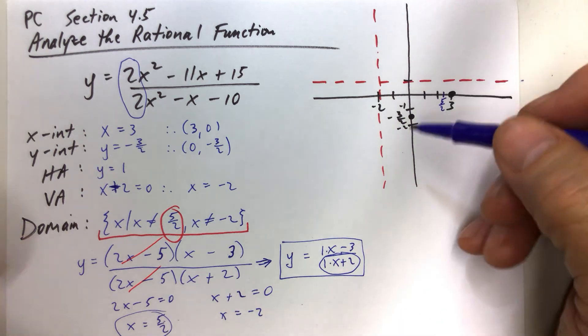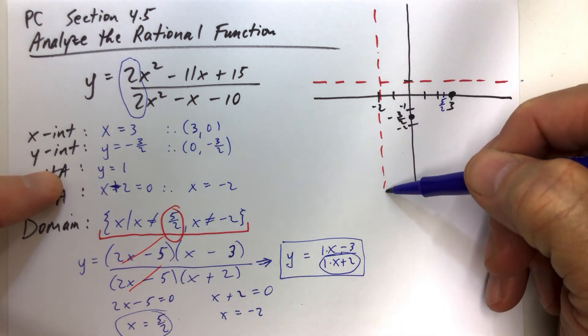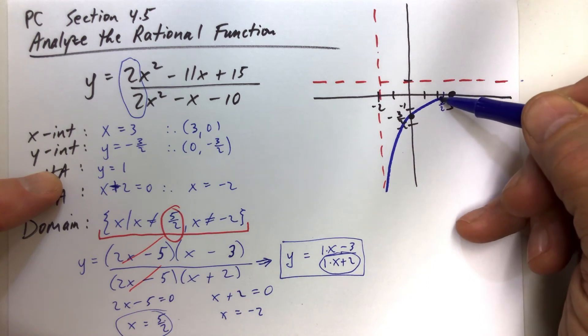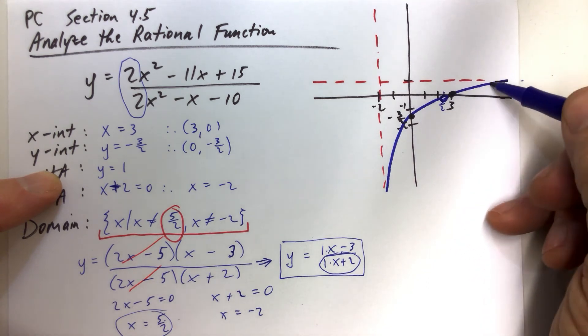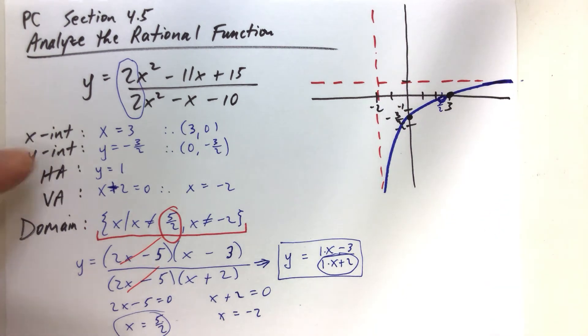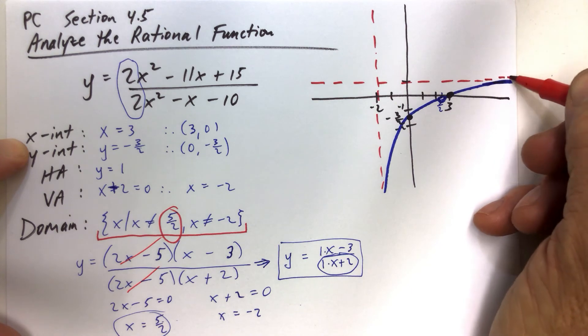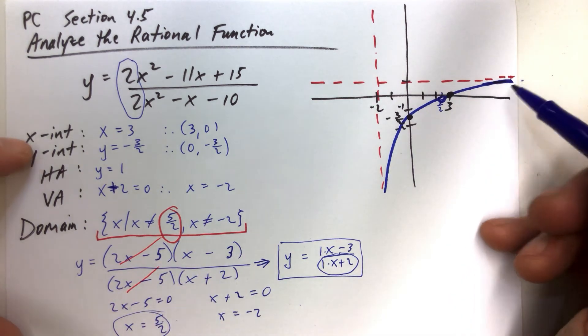So we're going to connect our dots. We're going to connect vertical asymptote to horizontal asymptote. And we have a hole right there. And then we have the horizontal asymptote.